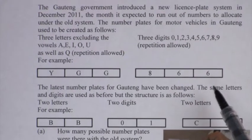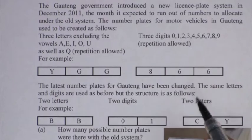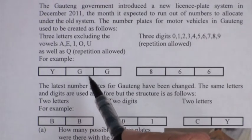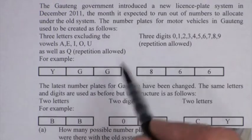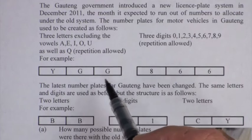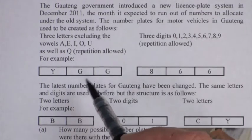This problem on the Gauteng license plate system comes from the Mind Action Grade 12 mathematics textbook. This is a very real-life question and very exciting to see how we use the counting principle.